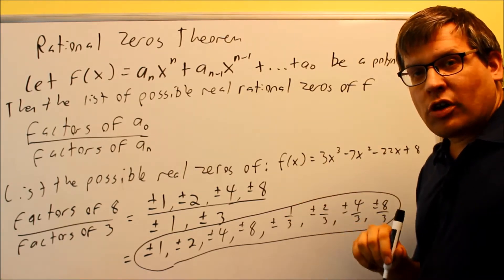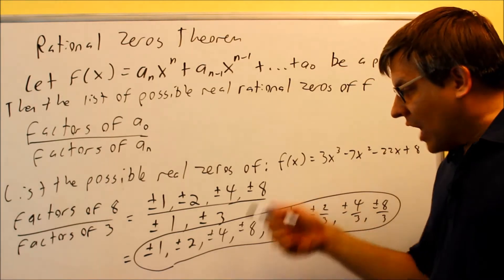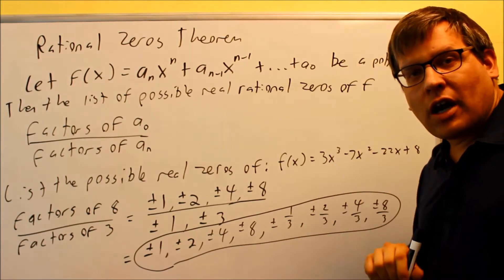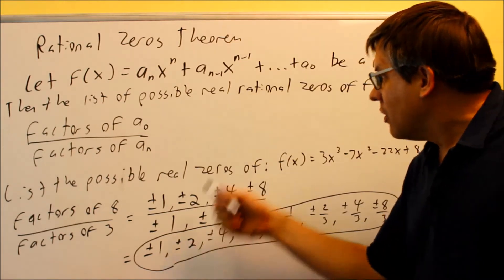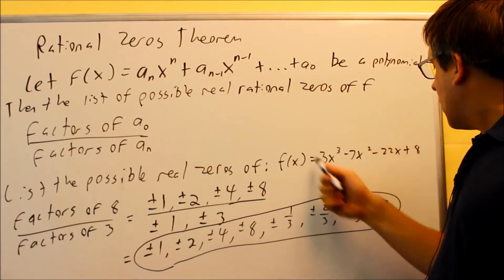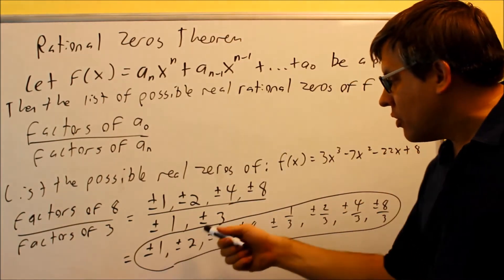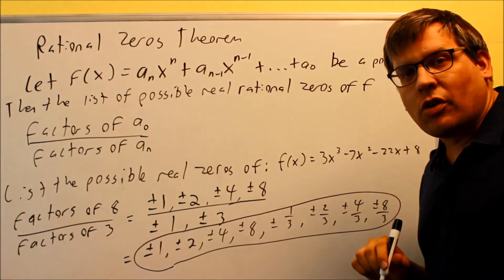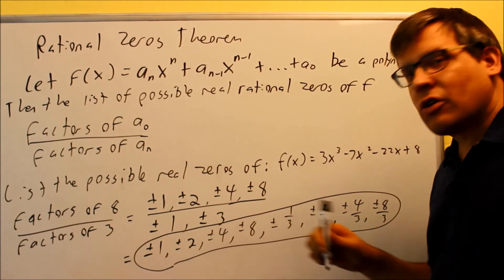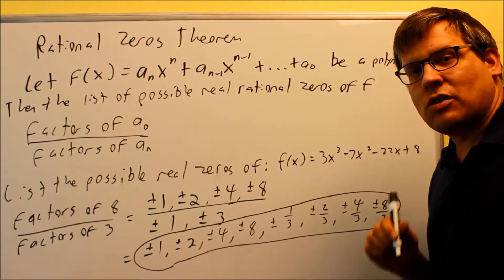To find out which one it actually is, you have to actually either use a graphing calculator or we're going to do synthetic division where you would take this and do synthetic division with each individual number on this list until you find one that gives you a remainder of zero. That will tell you then that that particular number is in fact going to be an x-intercept.